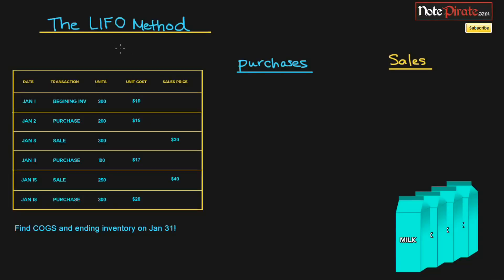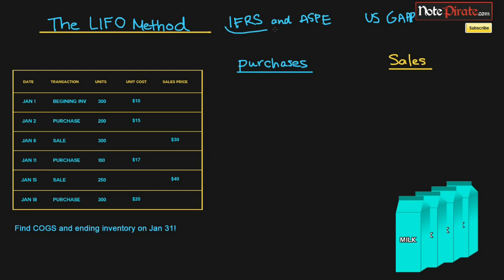Welcome to the LIFO method presentation, where we're going to be talking about Last In, First Out — that's what it stands for. It's the opposite of the FIFO method, and it's illegal under IFRS and ASPE — or PE GAAP — but it is okay under US GAAP. ASPE is just private enterprise GAAP for Canada, while IFRS is the international standard, so LIFO is not permitted under those standards.